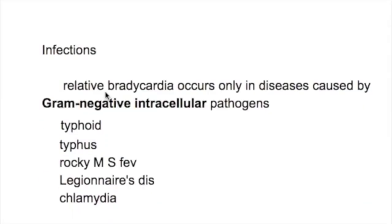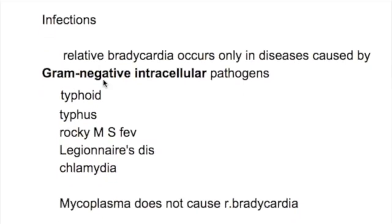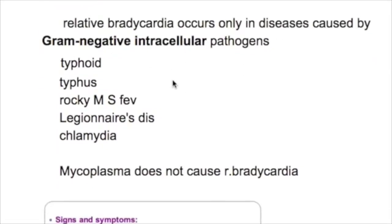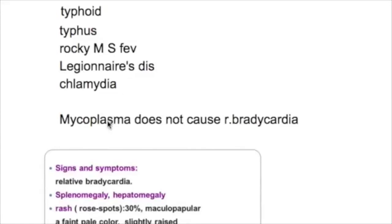Which infections cause relative bradycardia? Gram-negative intracellular pathogens cause relative bradycardia. These include typhoid, typhus, Rocky Mountain spotted fever, Legionella disease, and Chlamydia. Mycoplasma does not cause relative bradycardia.